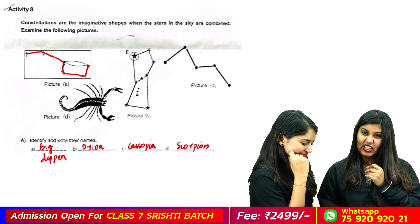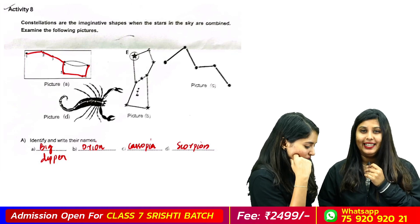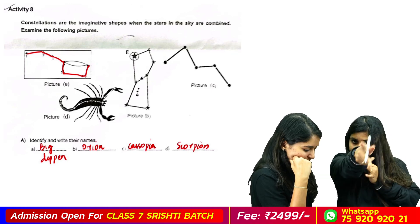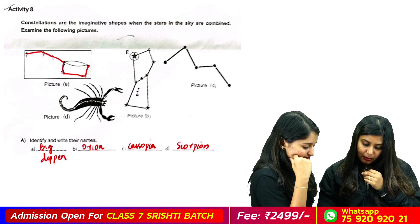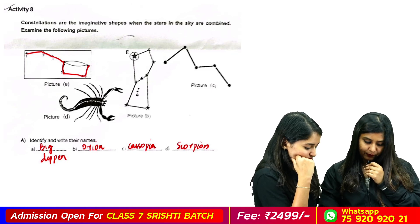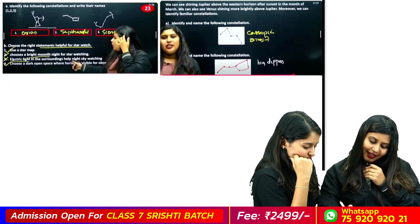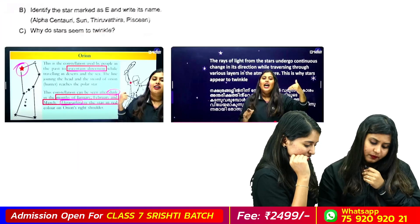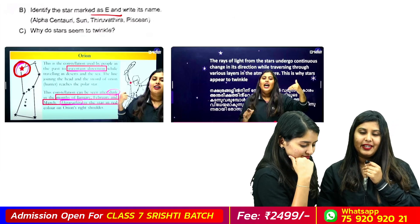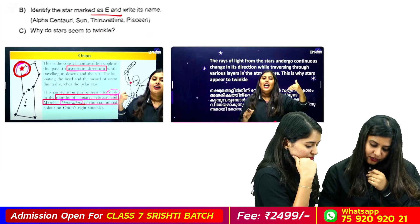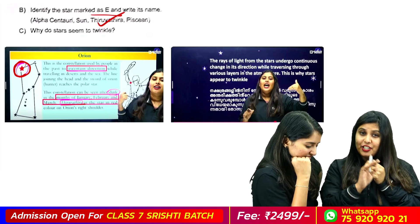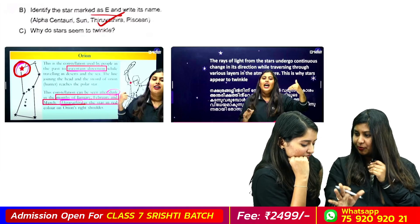Constellations. This is a Big Dipper. Big Dipper. This is an Orion. This is a Cassiopeia. This is a Scorpion. This is a Big Dipper. Identify the star mark. This is a red star.